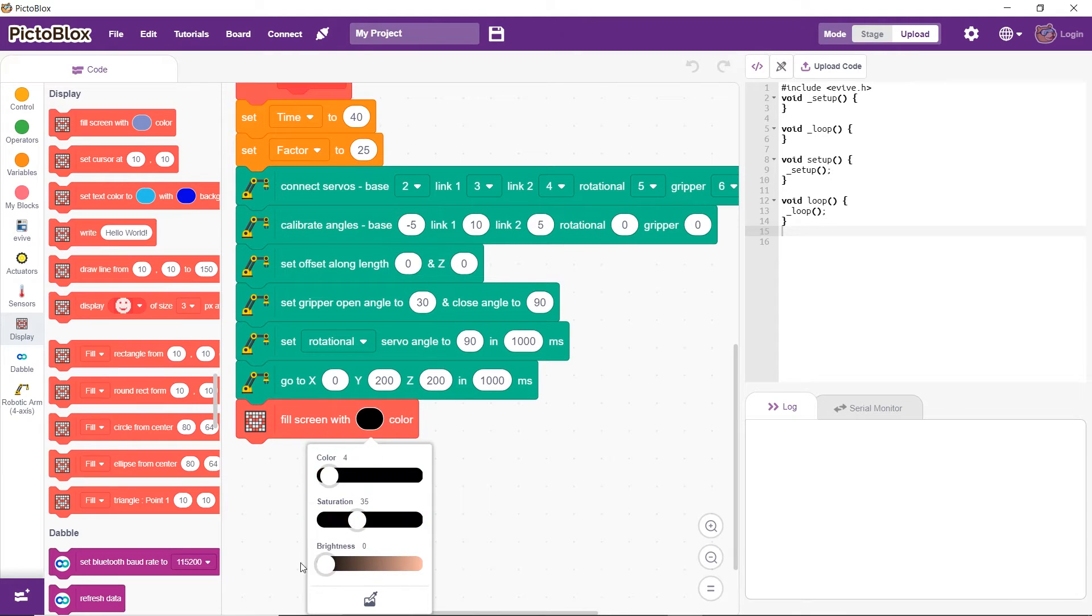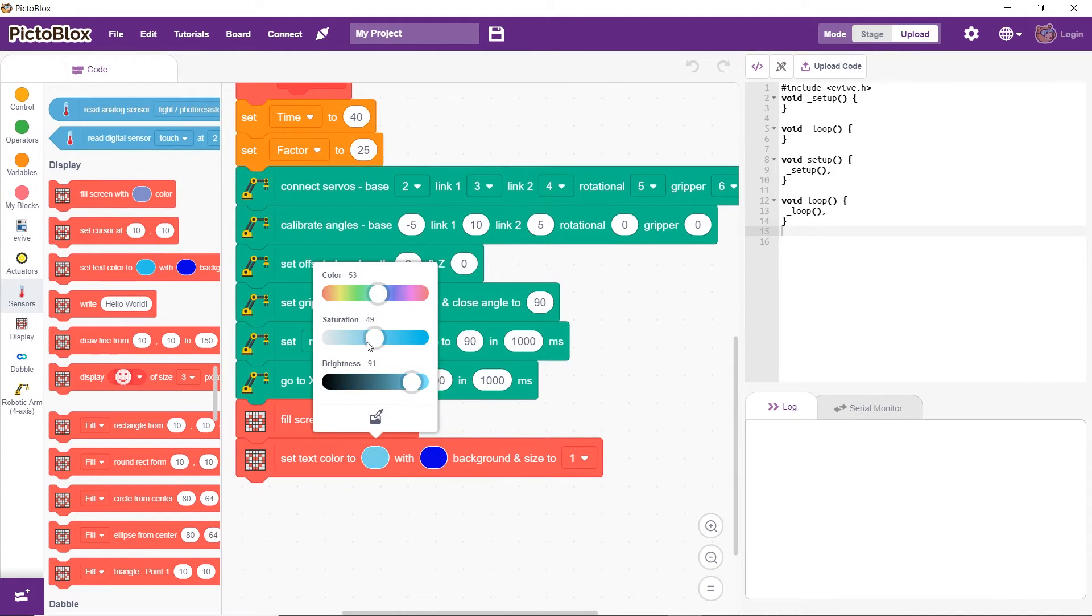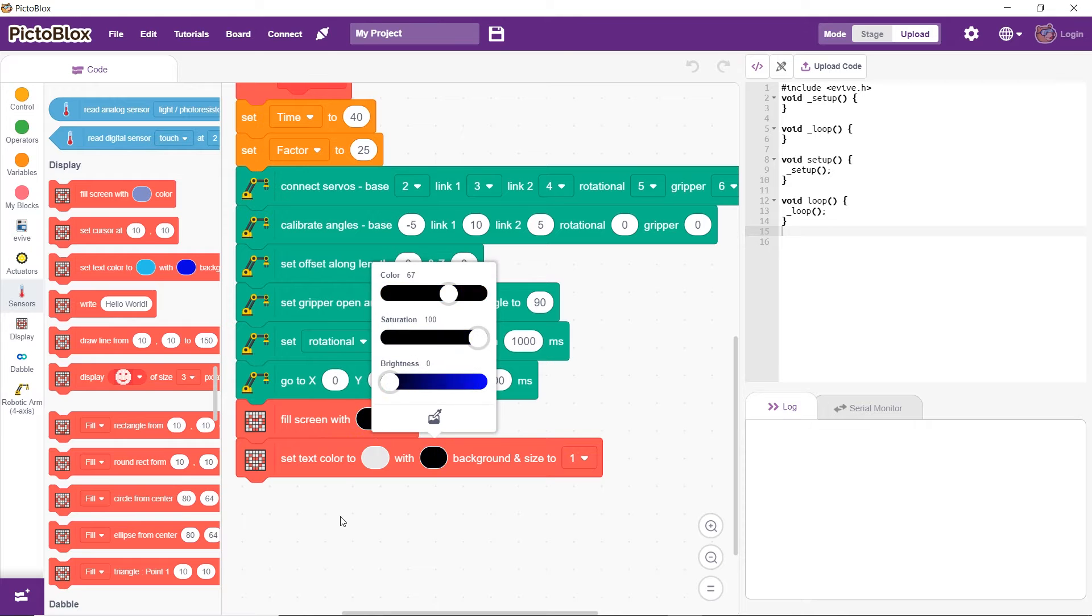Set the initial angle for the rotational servo as well. Keep the gripper open and send it to the home position, the coordinates of which are 0, 200, 200. Also, set the text color, background color and font size.